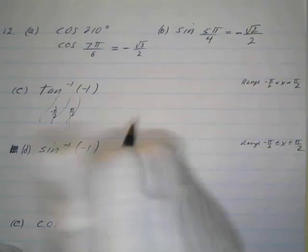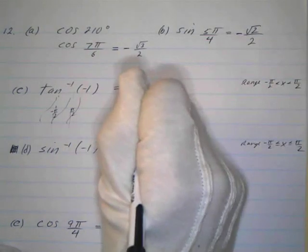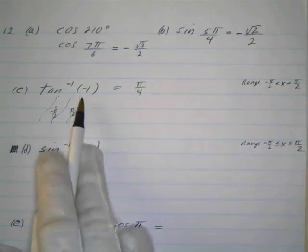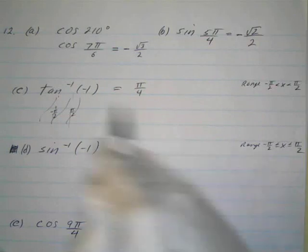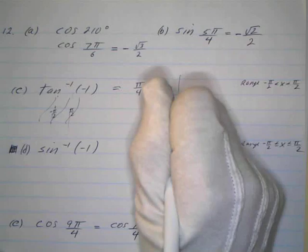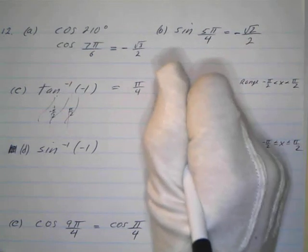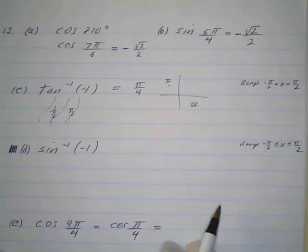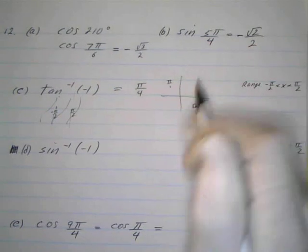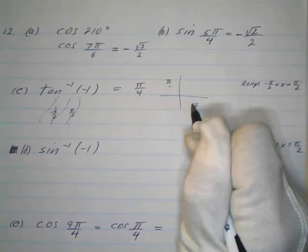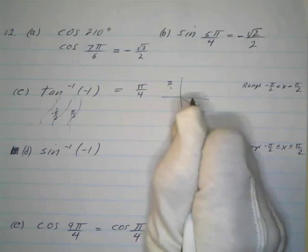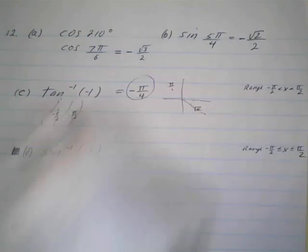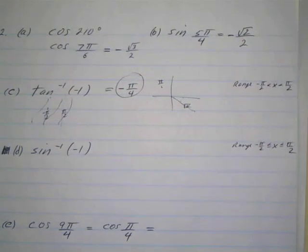When is the tangent equal to negative 1? The tangent equals 1 at π/4, and it's positive in the first and third quadrants. It equals negative 1 in the second and fourth quadrants. We could say 7π/4, but we can't use that because we have to stay within the restricted range of -π/2 to π/2. So instead we say negative π/4 — that is your solution.